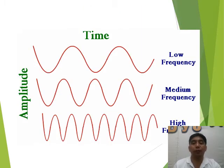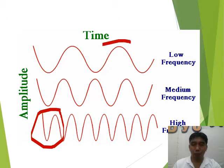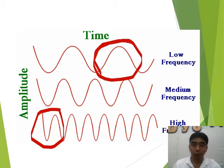The distance from one crest to another crest is called wavelength. In addition, the amplitude refers to the height of the wave, and one complete wave cycle is called frequency.